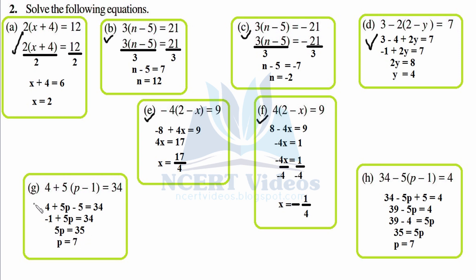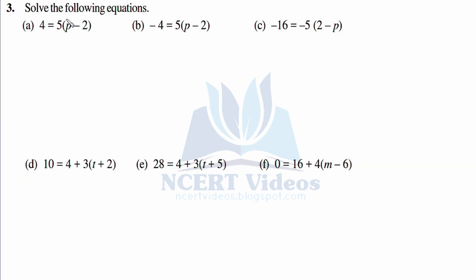Divide both sides by 5, so p equals 7. Part h: 34 minus 5 times (b minus 1) equals 4. Open the bracket: 34 minus 5b plus 5 equals 4. So 39 minus 5b equals 4. Transposing: 35 equals 5b. Divide both sides by 5 — 5 cancels — so p equals 7. That's your second question.